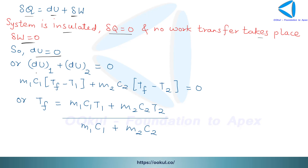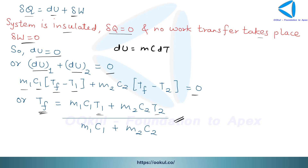Since the system constitutes two bodies, the change of internal energy for body 1 plus that for body 2 equals zero. Using dU = mc·dT, we write: m1·c1·(Tf − T1) + m2·c2·(Tf − T2) = 0. From this we get the final temperature Tf = (m1·c1·T1 + m2·c2·T2) / (m1·c1 + m2·c2). This is a general expression where any values of masses, specific heats, and initial temperatures can be substituted.